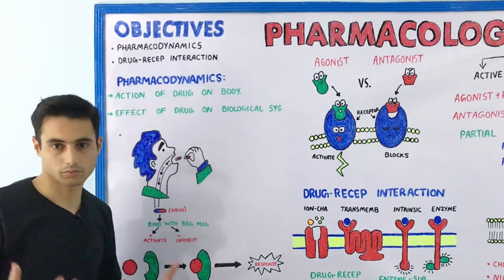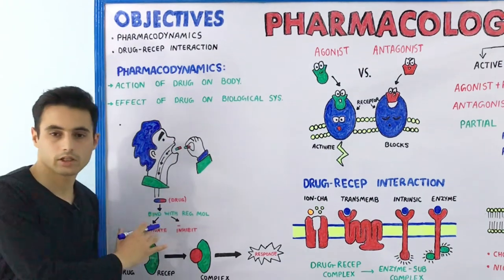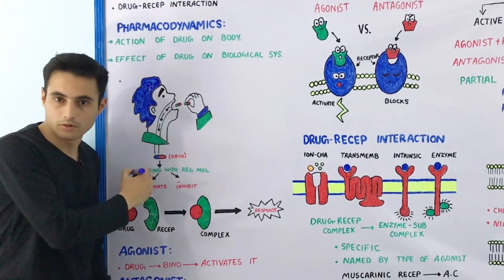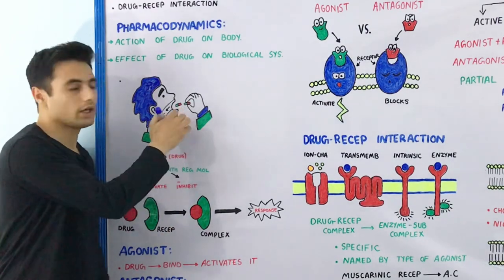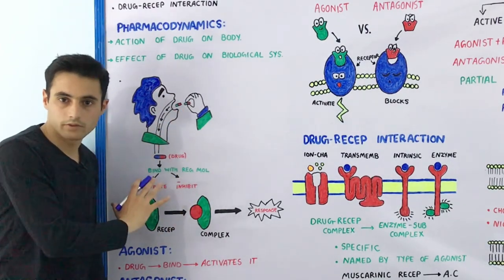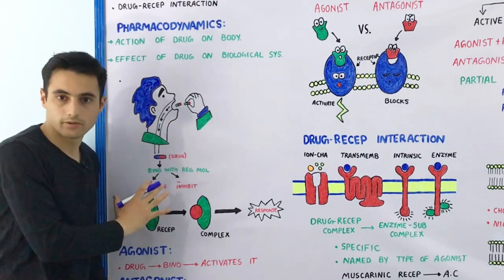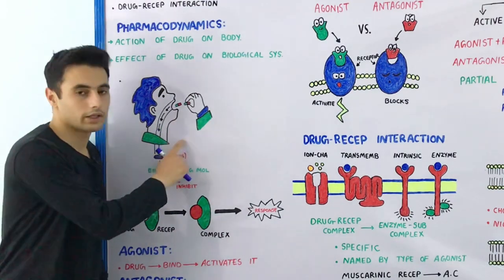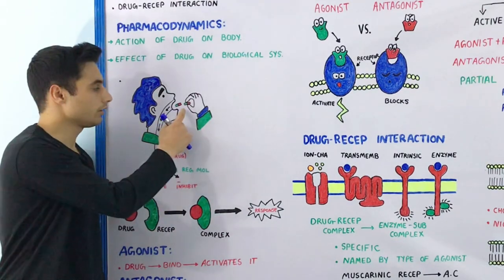Have a look at this diagram. When you take the medication or the drug in your body, two things happen: the drug will have some kind of action on the body, as well as the body will also show some kind of action on the drug. So two terms arise: pharmacodynamics and pharmacokinetics.